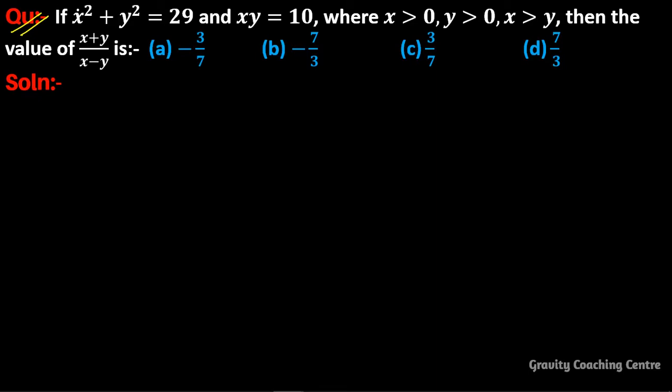Question: If x² + y² = 29 and xy = 10, where x > 0, y > 0, and x > y, then the value of (x + y)/(x - y) is?